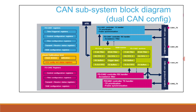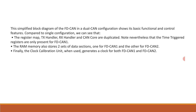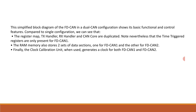The clock calibration unit, when used, generates a clock for both FD CAN 1 and FD CAN 2. Please note the differences between the single CAN configuration and the dual CAN configuration.